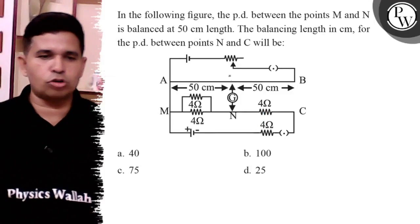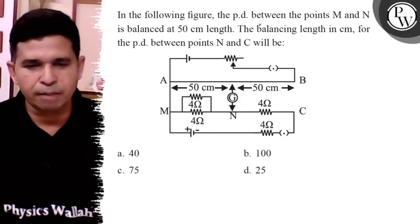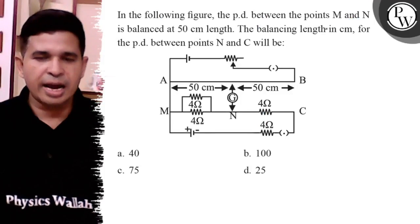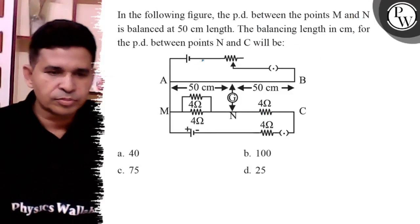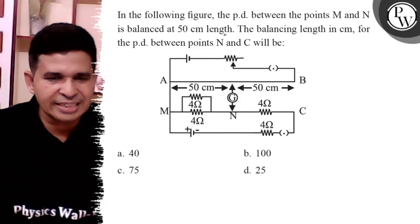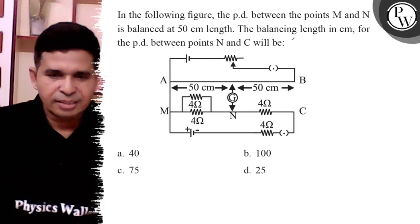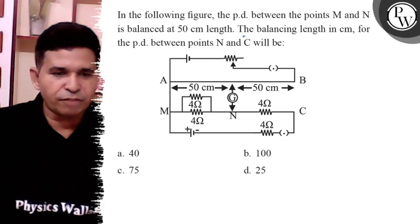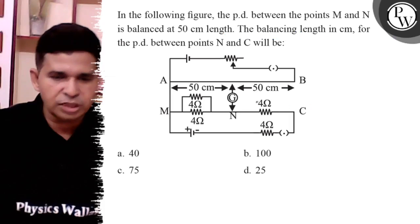Hello Bachchan, let us see this question. In the following diagram, the potential difference between M to N is balanced at 50 cm length. The balancing length in centimeters for the potential difference between N to C...